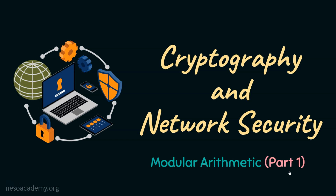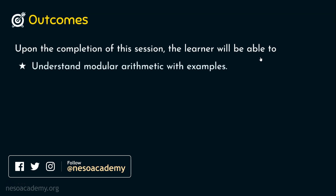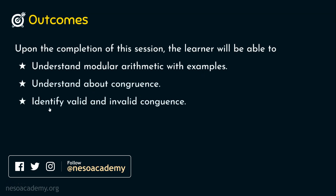As usual, let's start the session with the outcomes. Upon completion of the session, the learner will be able to: Outcome 1 — understand the Modular Arithmetic operation with examples. Outcome 2 — understand about congruence. And Outcome 3 — identify valid and invalid congruences.